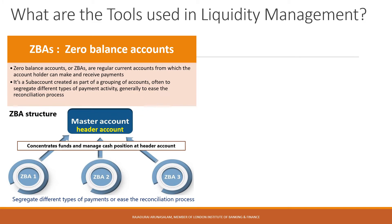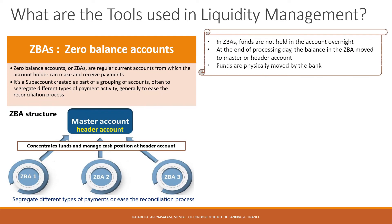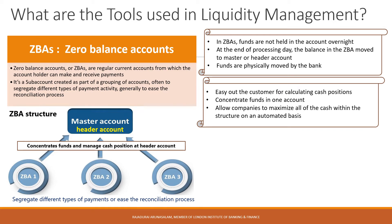Zero balance accounts give a company the ability to operate multiple sub-accounts in a country, often to segregate different types of payments or ease the reconciliation process, while concentrating all available funds at the end of the day into a single main account from which it can manage its cash positions. The funds are not returned to the zero balance account the next day — they remain in the main account. This type of account removes the burden from the account holder of calculating cash positions across numerous accounts and then initiating payment instructions to concentrate funds in one account.